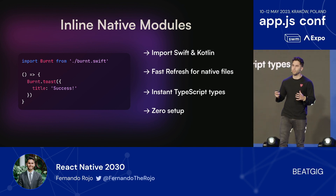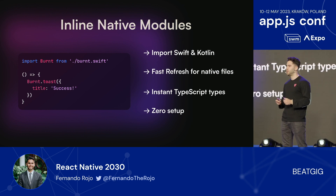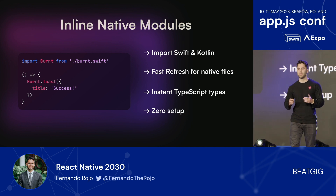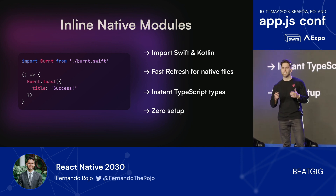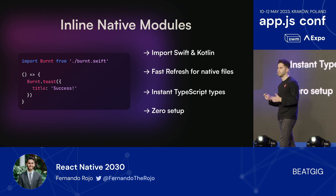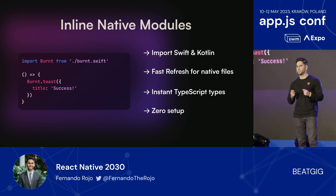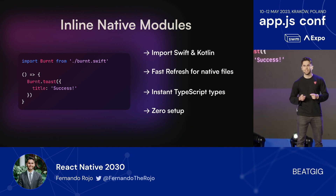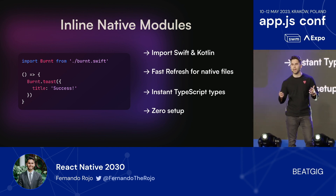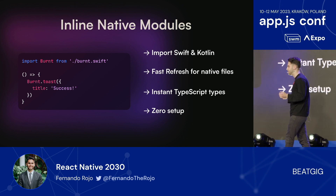My favorite part is the automatic TypeScript types. Using AST parsers for Swift and Kotlin, we can read in what the types are and automatically cast them. And using TypeScript declaration merging, we can apply these files with their types. All of this will work without any additional setup. So if you're building a library that just needs one native file, or if you have a ton of native files in your app, all you need to do is write it, import it, and you're good to go.